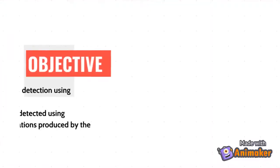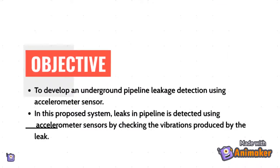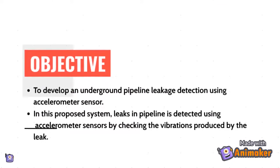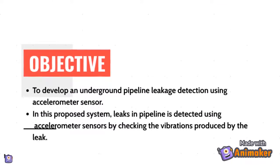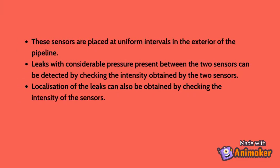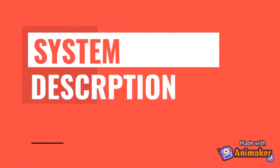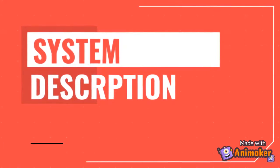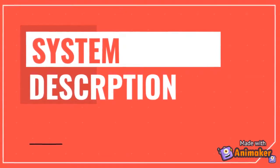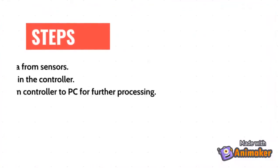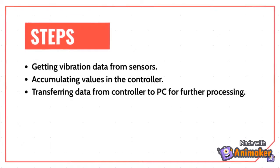Hello everyone. Our project is Underground Pipeline Leakage Detection System. Water distribution is generally installed through underground pipes. Monitoring underground water pipelines is more difficult than monitoring water pipelines located on the ground in open space. This situation will cause a permanent loss if there is a disturbance in pipelines such as leakage.